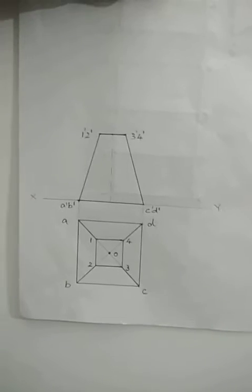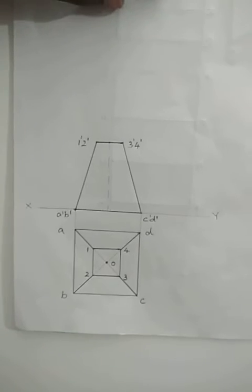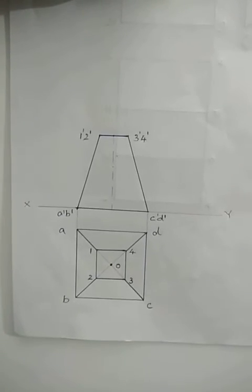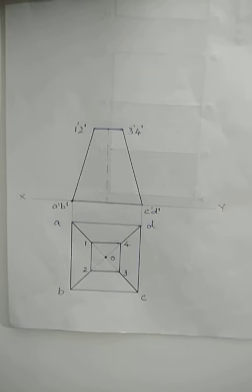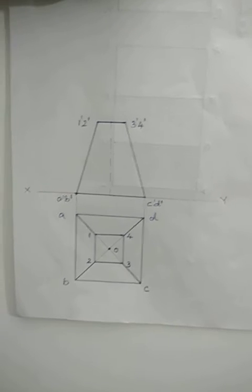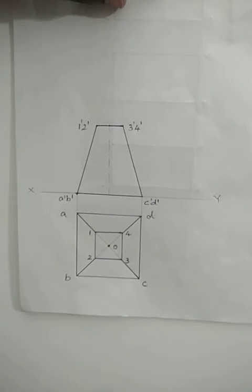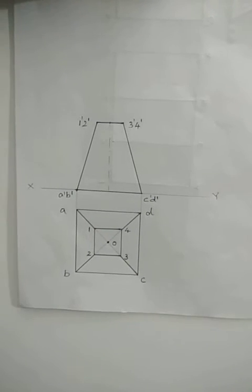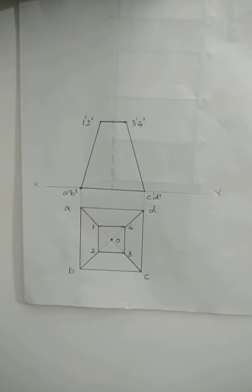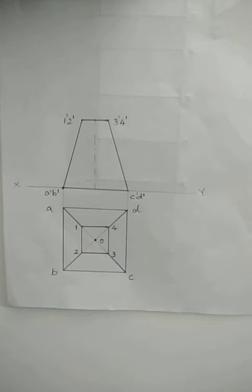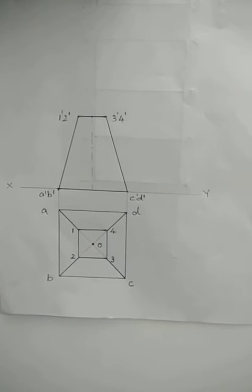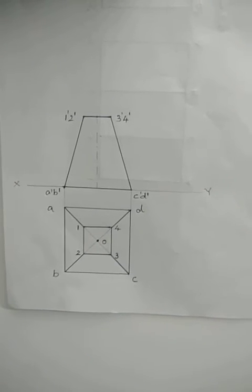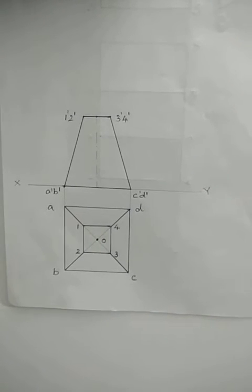We are going to start with the 8th question. As you can see, you are asked to find the shortest distance. But look at the solid — the solid is a frustum of a square pyramid. It is not a pyramid; it is a frustum of a square pyramid.